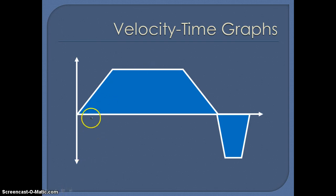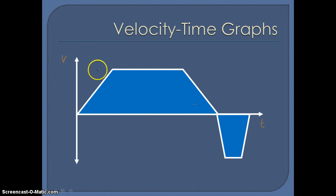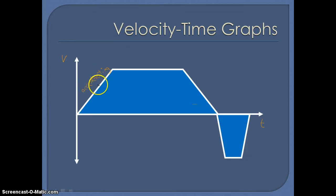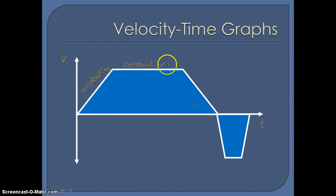Moving on to velocity-time graphs. We always use time on the horizontal axis and velocity on the vertical axis. If the graph is sloping upwards from left to right, that means we have an acceleration — the velocity is increasing through time. A horizontal section means constant velocity with no change over time. And if the velocity is decreasing as time passes, we'd be decelerating.